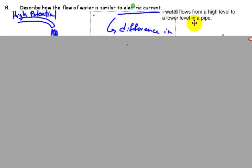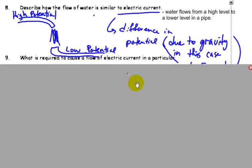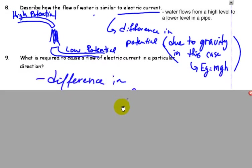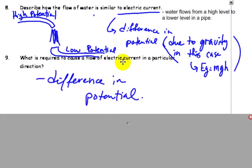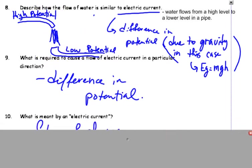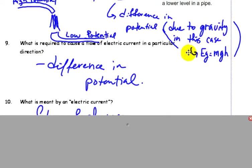Describe how the flow of water is similar to electric current. So, we can think of water flowing from a high level to a low level. Water always flows downhill, of course. So, if we're talking about electric current, there's a difference in potential energy, stored energy, going from a high potential to a low potential. Similar to water going from a high region to a low region. And, of course, what is needed to cause a flow of electric current, you have to have this difference in potential energy. So, very similar to gravity, high to low. And we'll look at, in the next booklet, I believe, what do we mean by that potential.